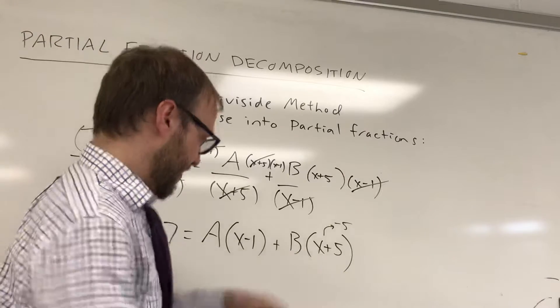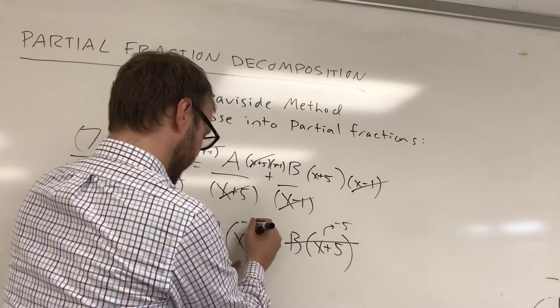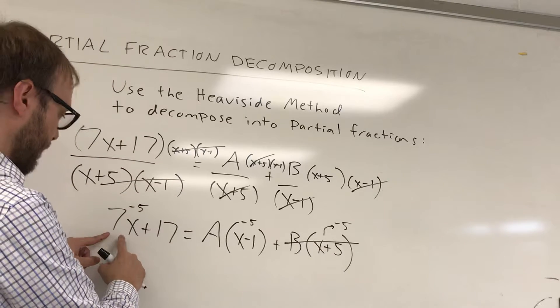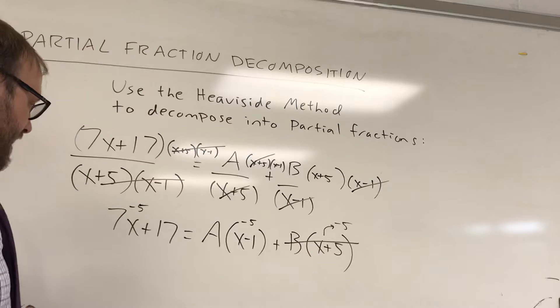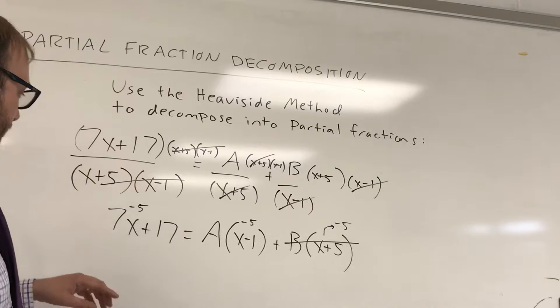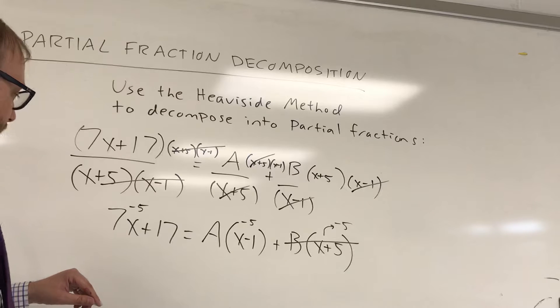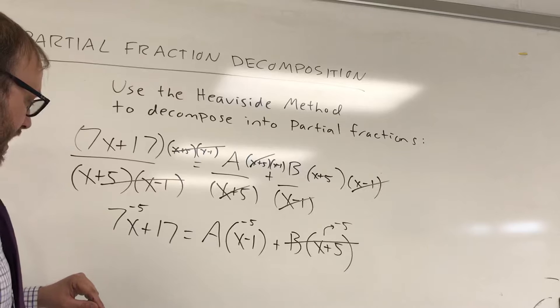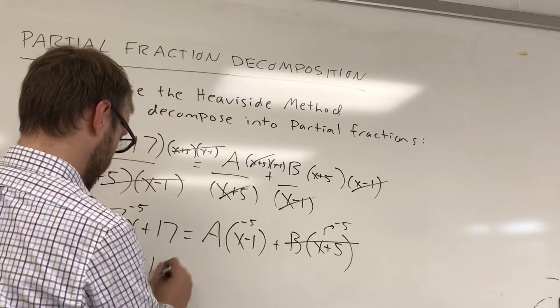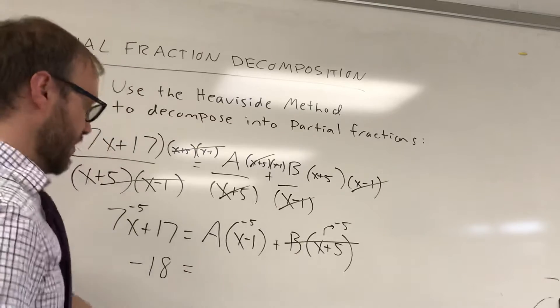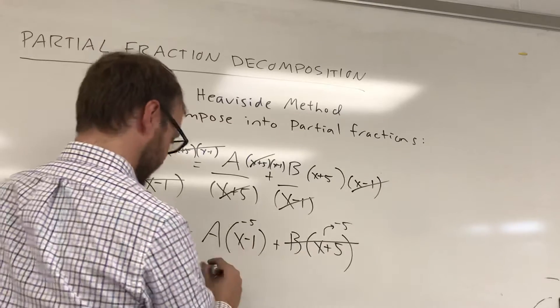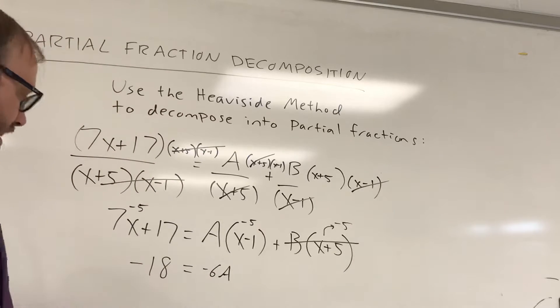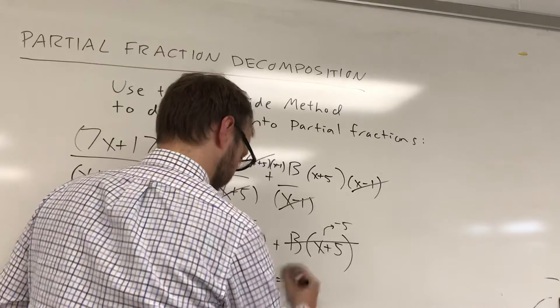So that knocks out the B. We put in a negative 5 here. We put in a negative 5 here. And what you're going to get, you're going to get negative 35 plus 17, which is not really math I want to do right now. Negative 35 plus 17. Negative 35 plus 20 is negative 15. And it would be negative 18, I think. So negative 18 would be equal to, here we're going to get negative 6A. And you can see here, negative 6 times A needs to be 18. A is going to equal 3.